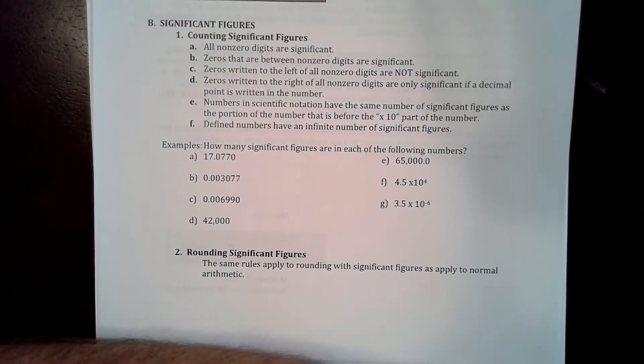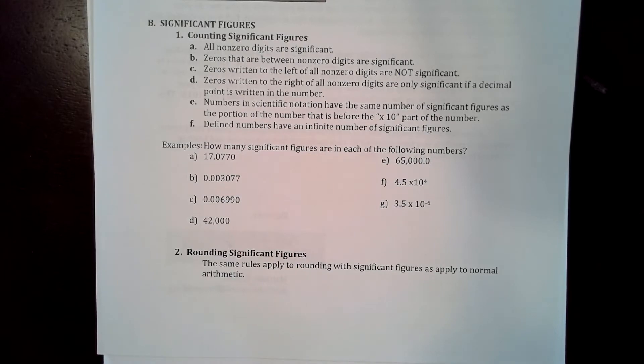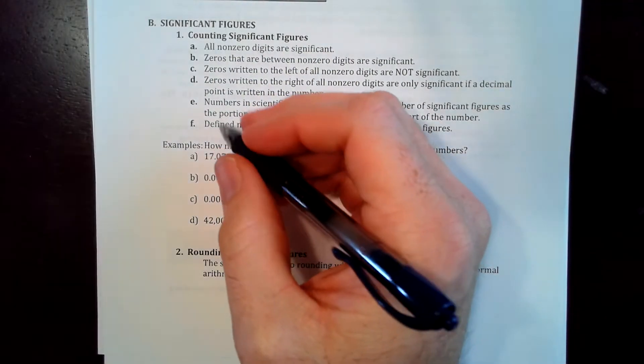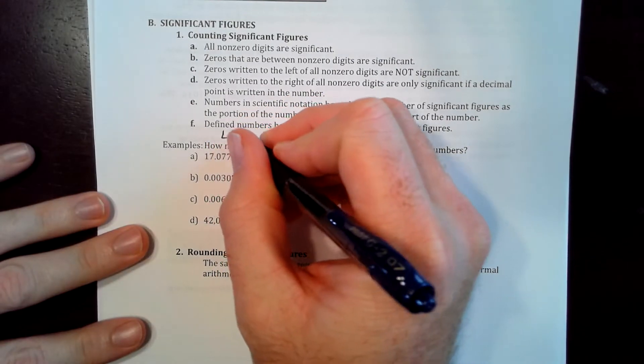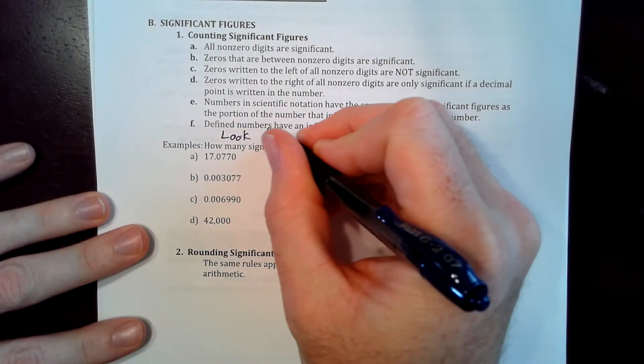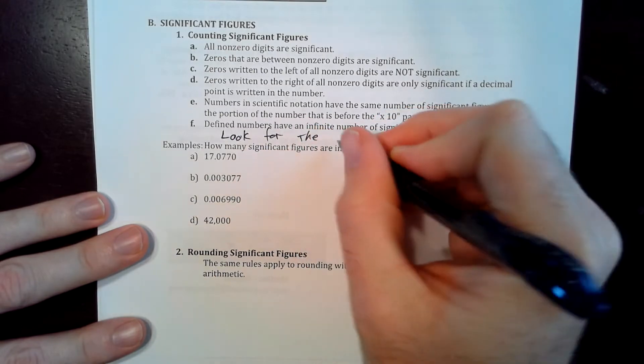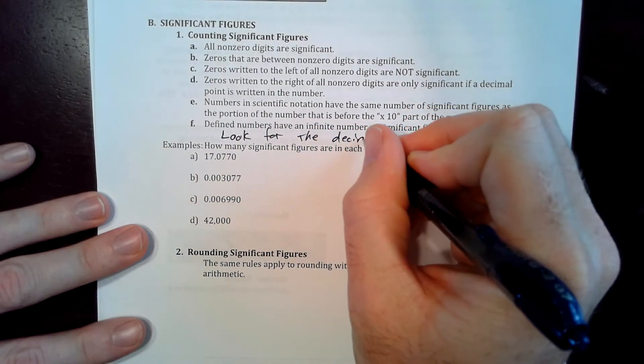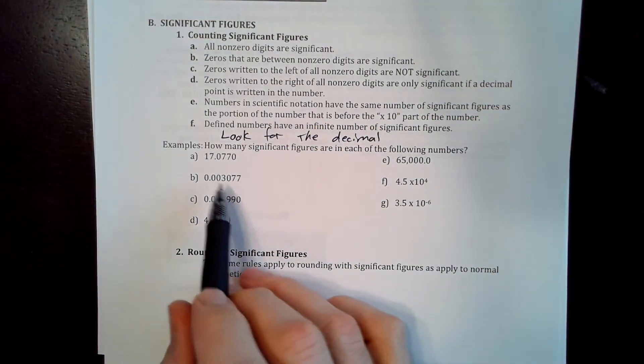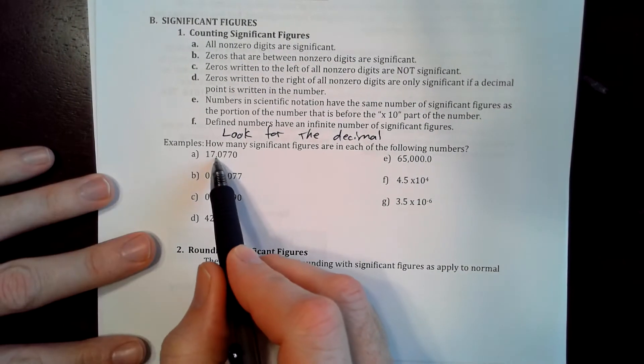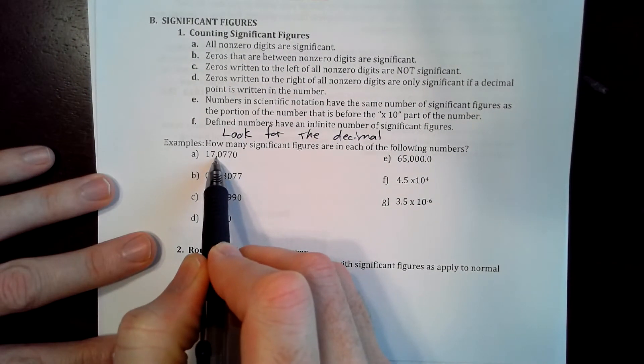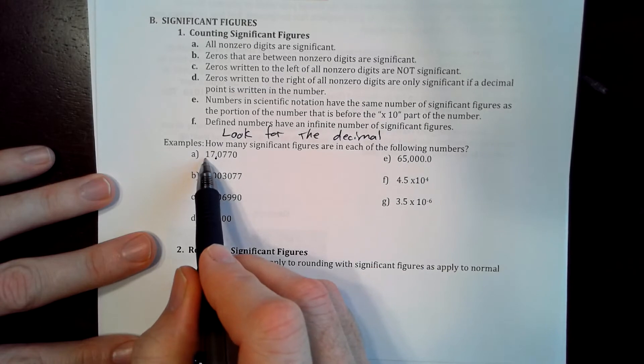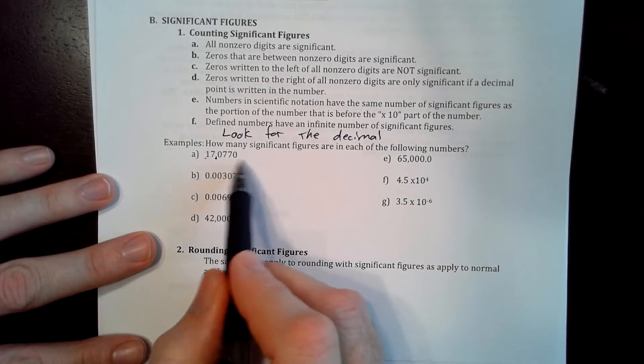So now let's get to sig figs. Now you can read the rules for this, but when I do these, I just kind of make sure I always look for the decimal. That is going to always be your key. So I'll give you Mr. Russell's rules here. If a decimal is present, after the first significant digit, everything else is significant.